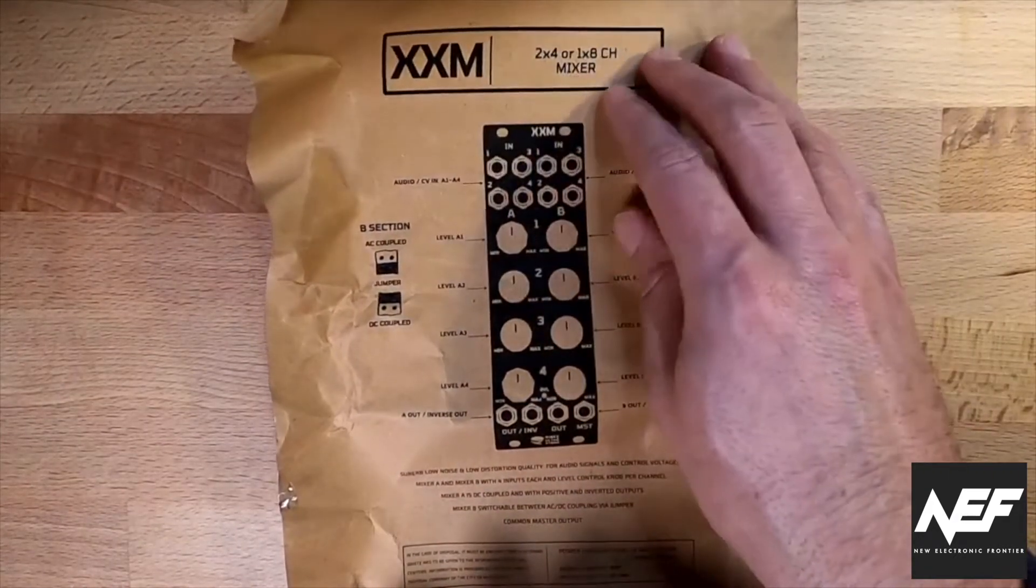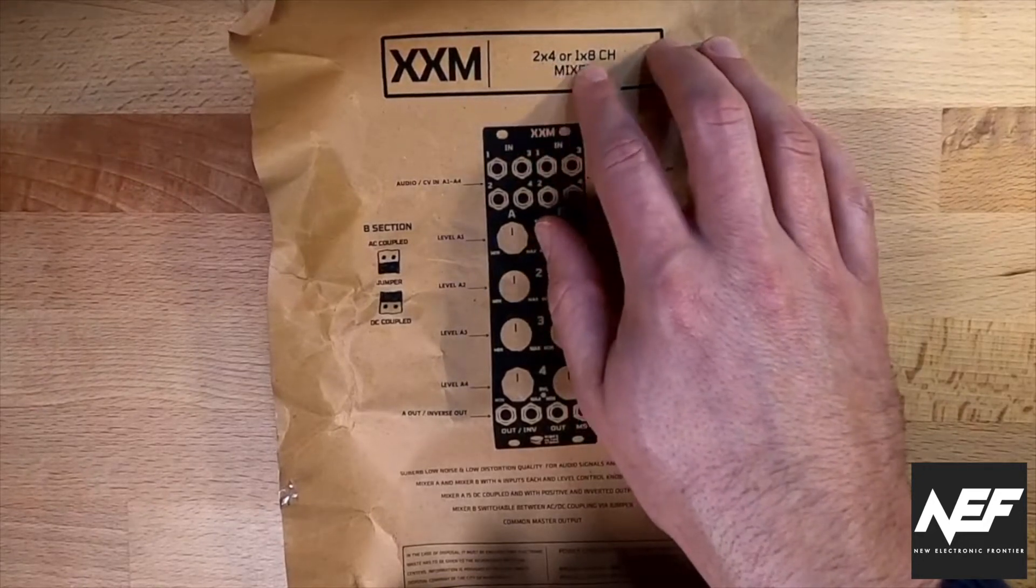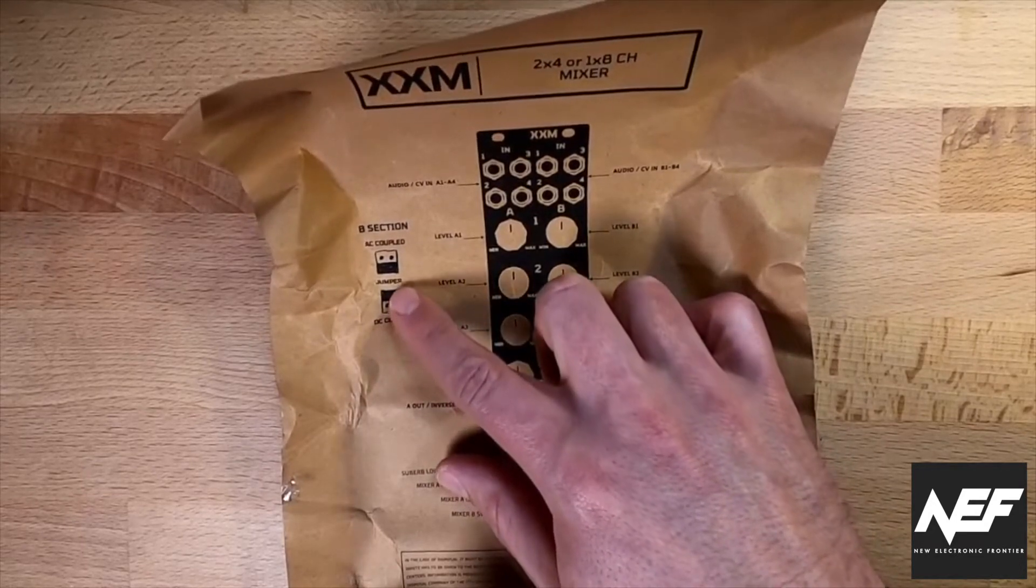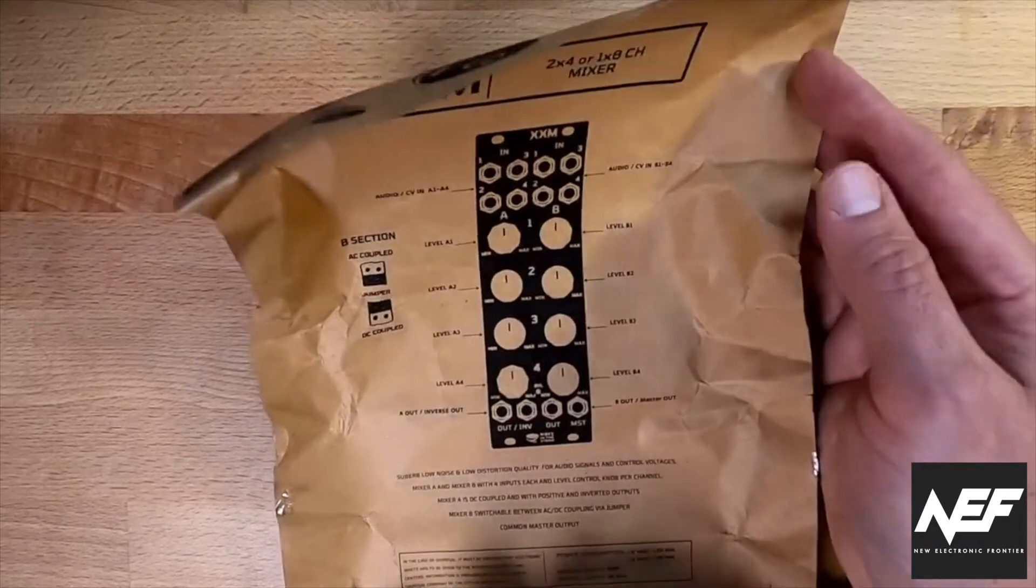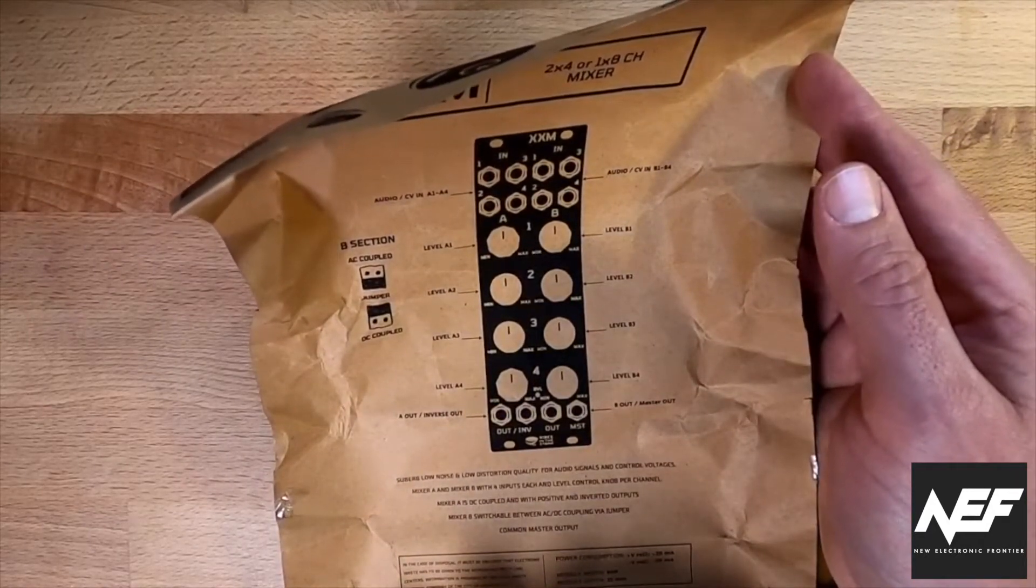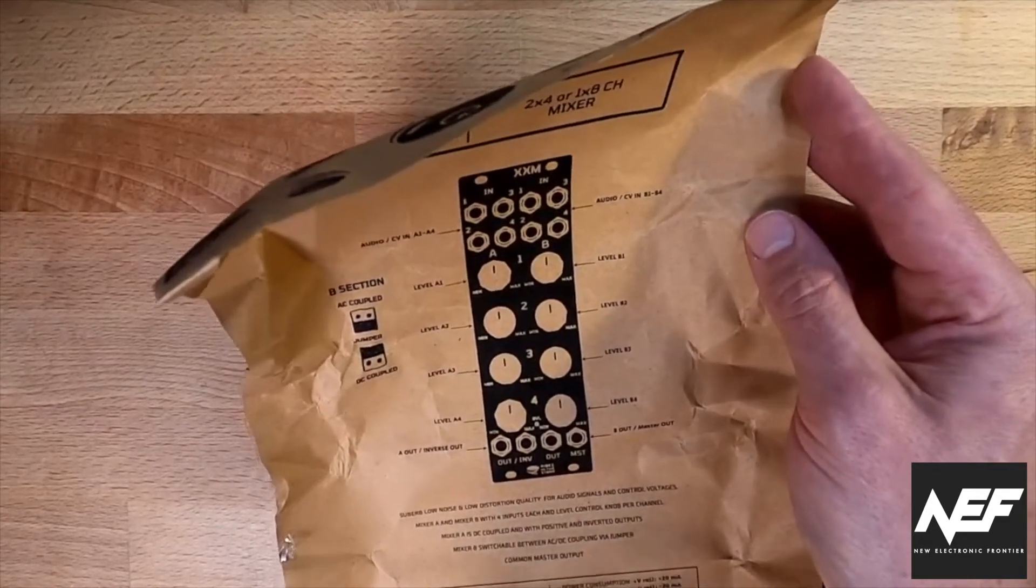The XXM is actually a mixer module. It can do a two times four mixer or one times eight, and with the jumpers you can configure it to have audio or CV input. It should bring a lot of flexibility - eight channels on just eight HP with low power consumption.